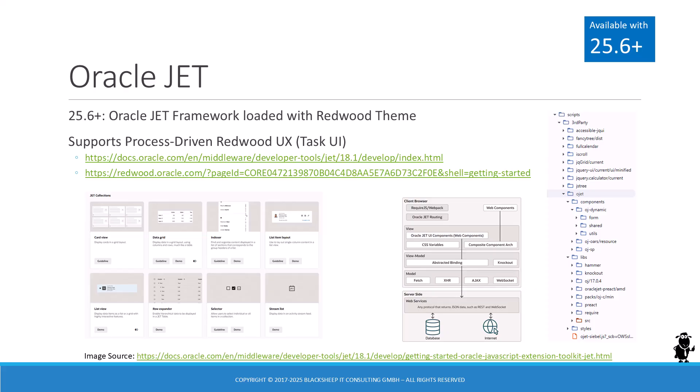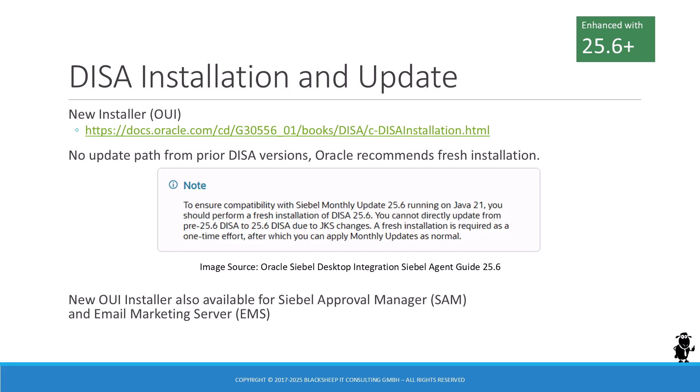It remains to be seen how Siebel Redwood UI evolves and we'll certainly keep an eye on it. Another area with significant changes is Desktop Integration Siebel Agent, or DESA for short. DESA 25.6 and onward is installed using the Oracle Universal Installer. Oracle recommends performing a fresh installation of DESA 25.6 as an update from prior versions is not possible. This is a one-time effort, as once you're on the new installation architecture, future monthly updates will be applied in place as usual. The new installer is also available — and the same rules apply — for Siebel Approval Manager and Email Marketing Server.